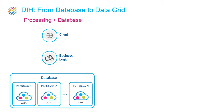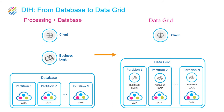Our offering is an out-of-the-box DIH solution based on a data grid, not a database. With a database, in a simplistic way, you have a client, some business logic, and the database itself — one machine or distributed, but just one database serving the data. With a data grid, the client's logic and data all reside on the same grid — it's partitioned and scale-out, with co-location of processing and data.